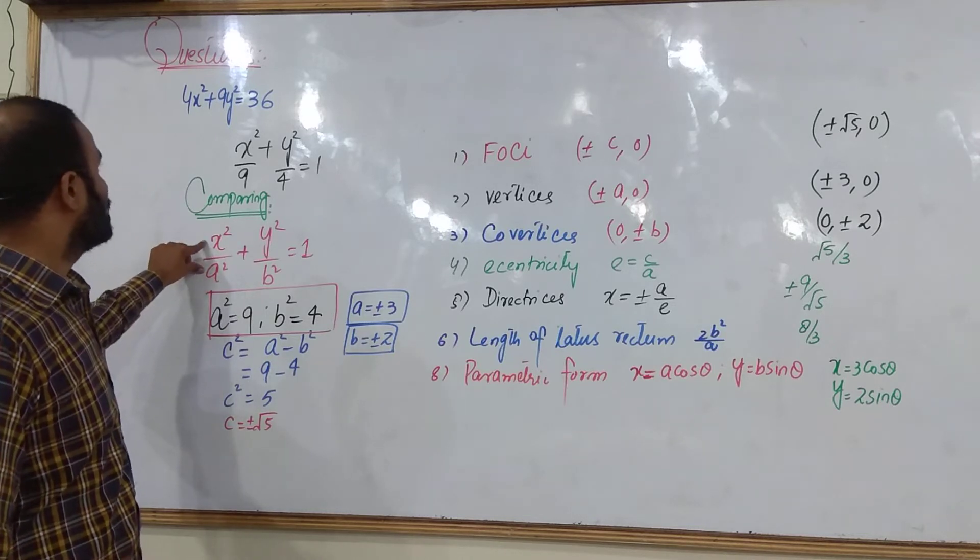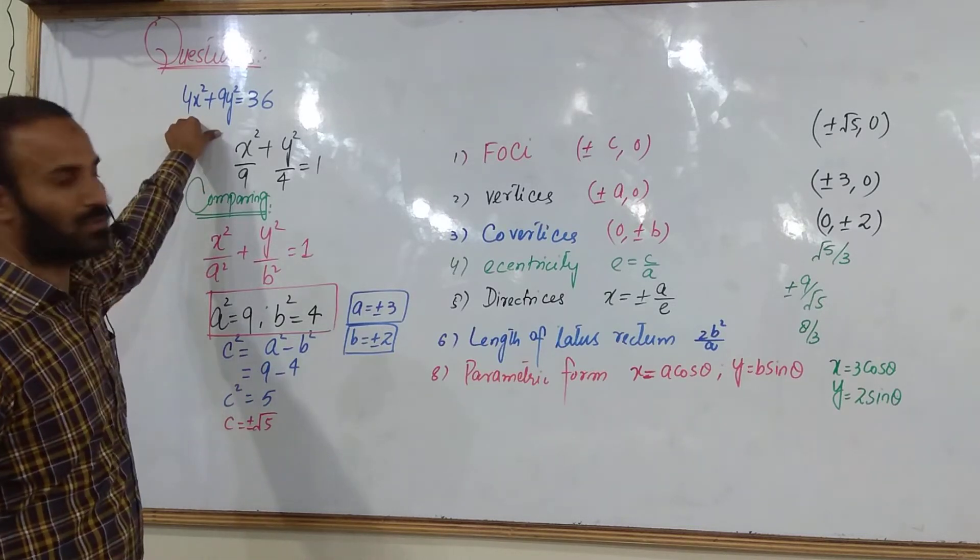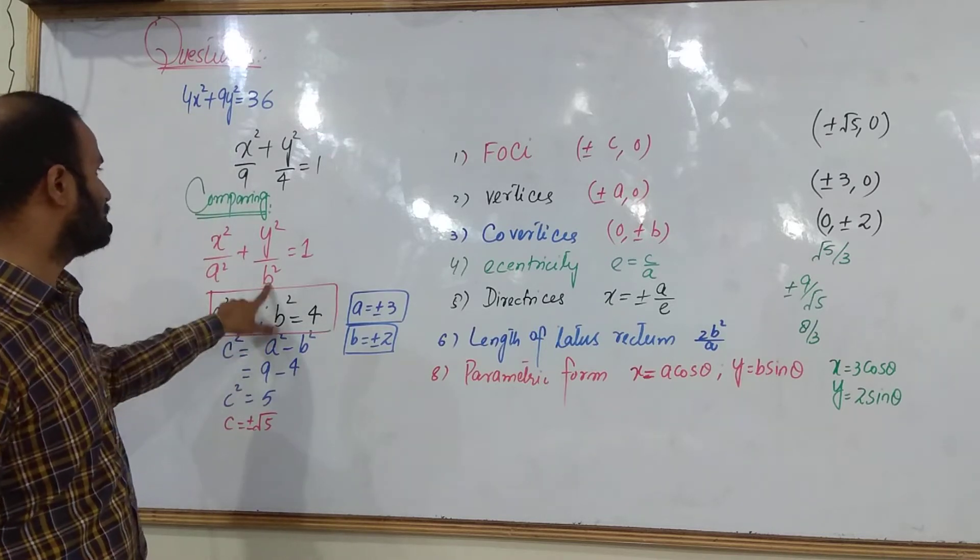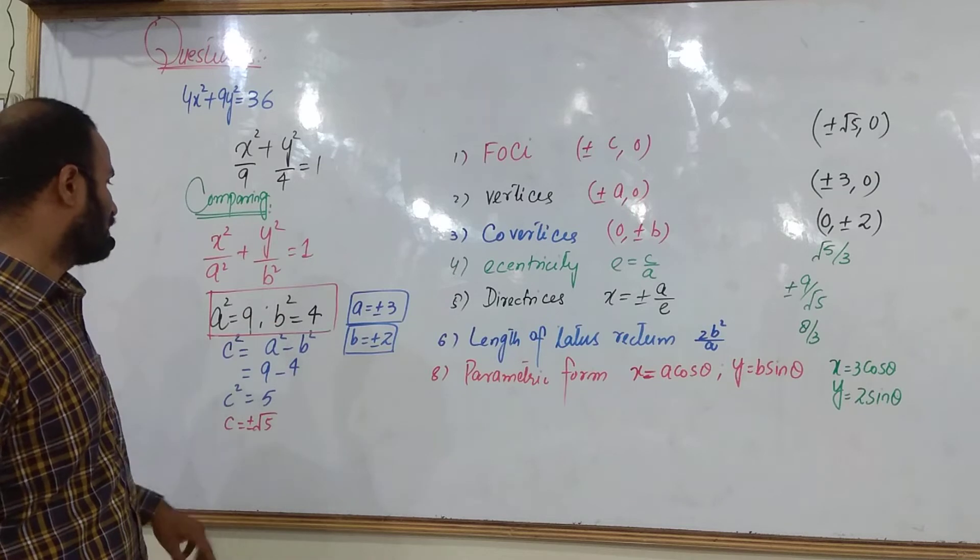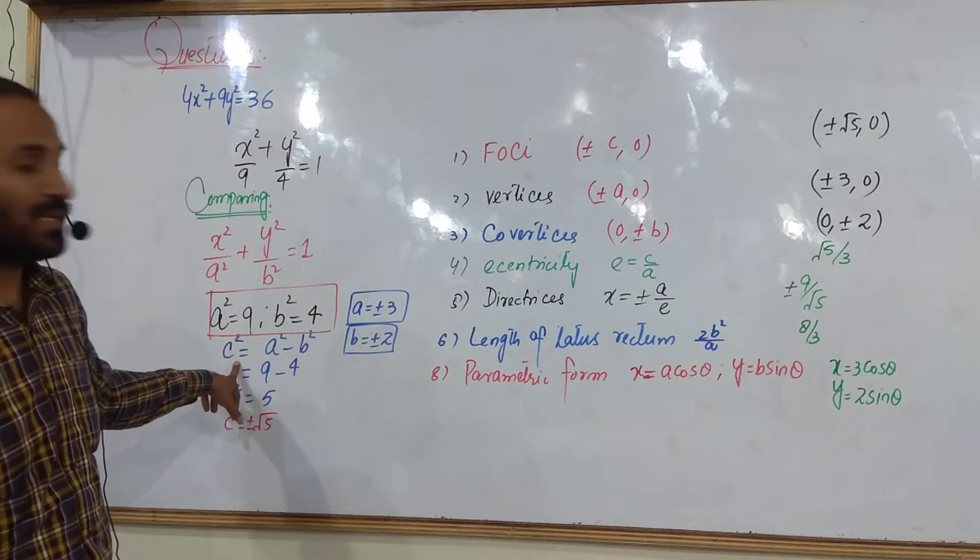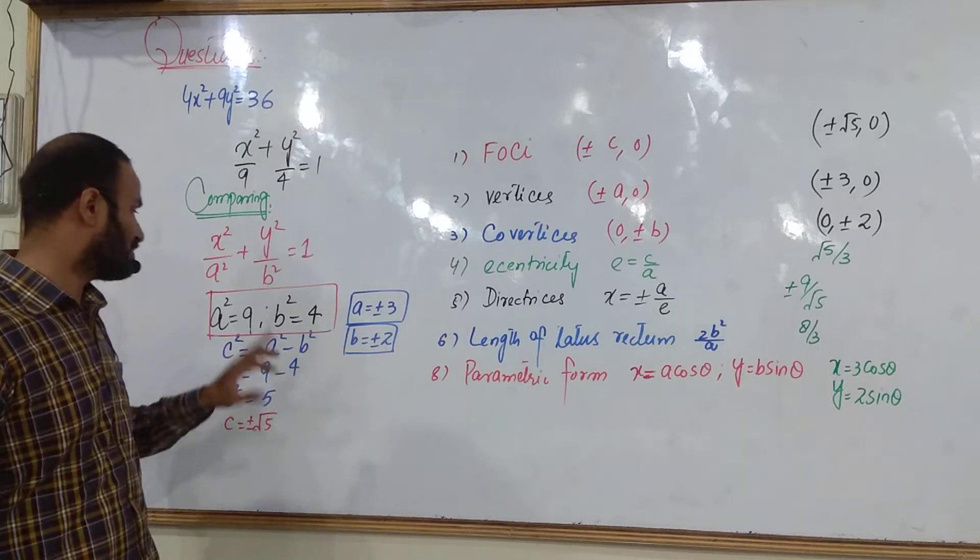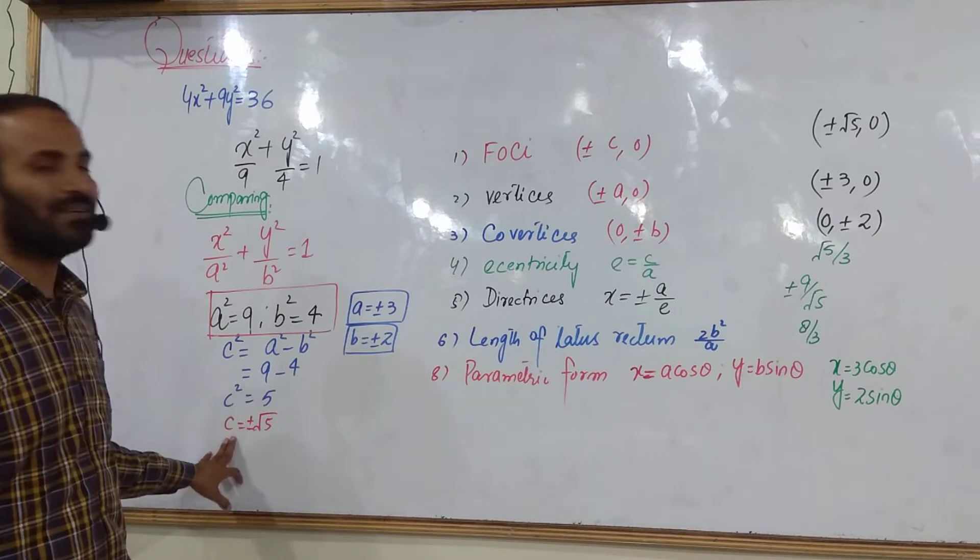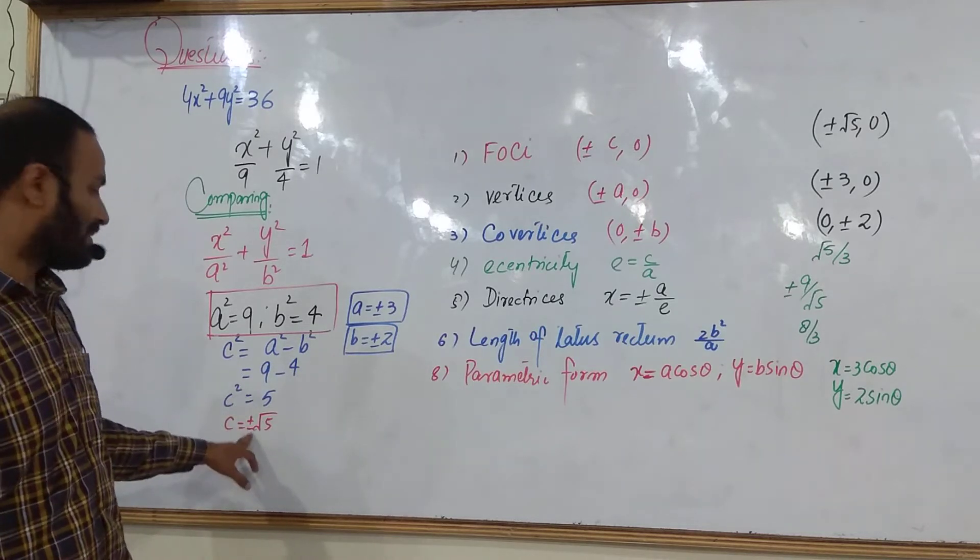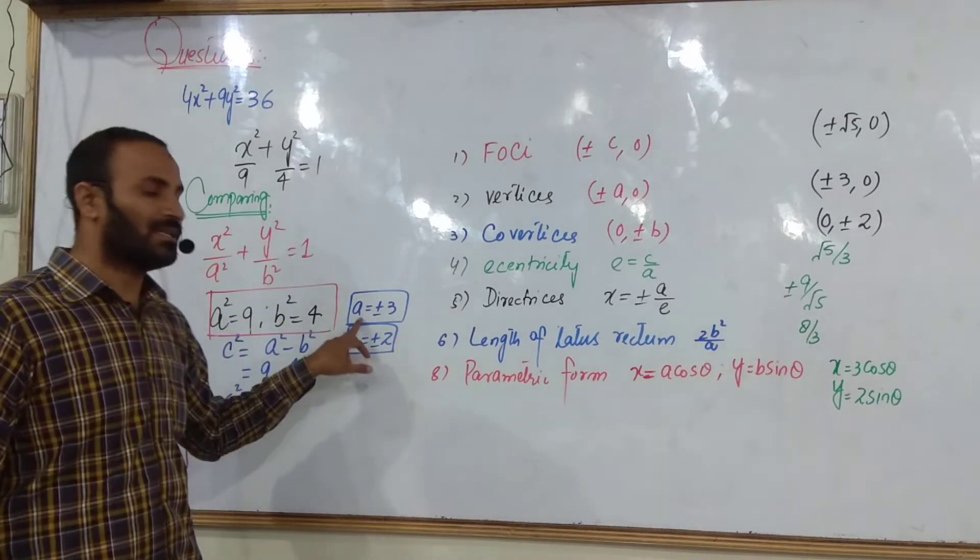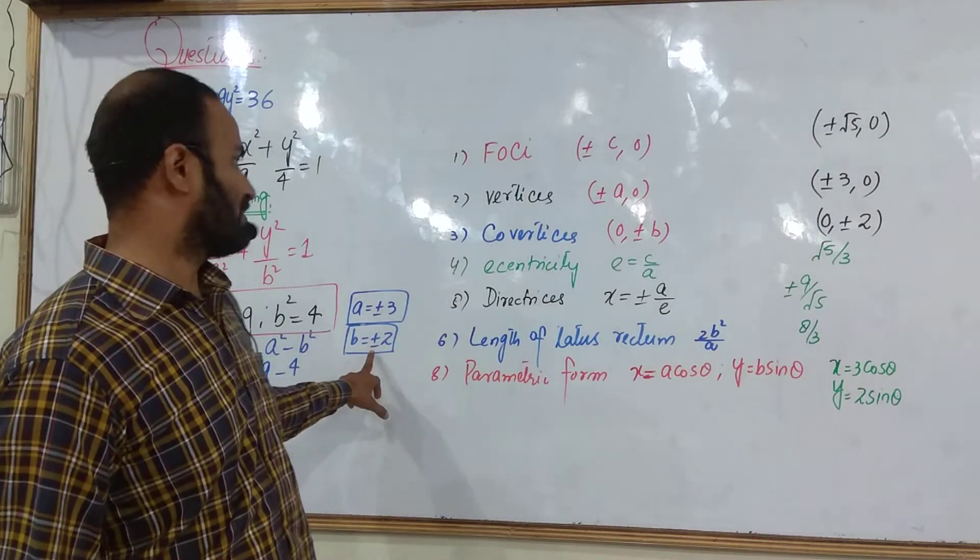When you have a standard form and you compare this, then you have a² which means 3² and 4². You have a relation with C² is equal to b² minus a². Now the point of C is a minus C. C makes (±C, 0) and this is equal to b.